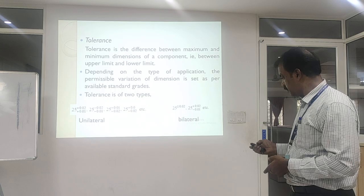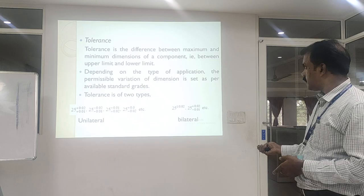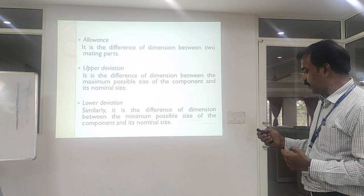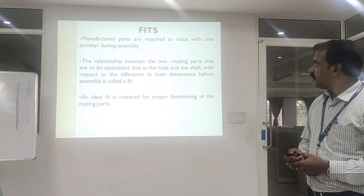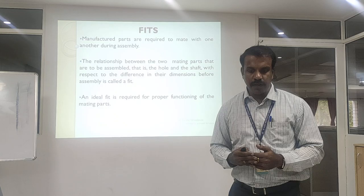Positive direction means the dimension is above the basic line, and negative direction means the dimension is below the basic line. Allowance is the dimension between the two mating parts — the deviation between the upper and lower component. And when coming to fits, fits are the manufacturing relationships that require components to mate with each other when going for assembly.